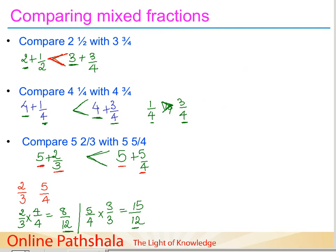There is one more way to do this comparison — convert the mixed fractions into improper fraction form and then compare. For two and a half, two times two is four plus one is five by two. For three and three by four, four times three is twelve plus three is fifteen by four.